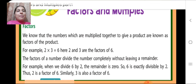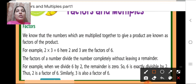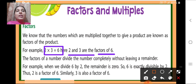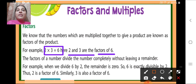Like I gave you one example here as well, that is 2 multiplied by 3. So when we multiply 2 by 3, we will get 6. So here 2 and 3 are factors of 6. The factors of a number divide the number completely without leaving a remainder, so 6 is divisible by both 2 and 3 without leaving any remainder.